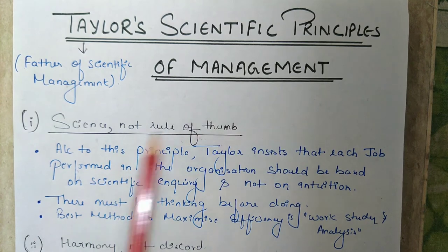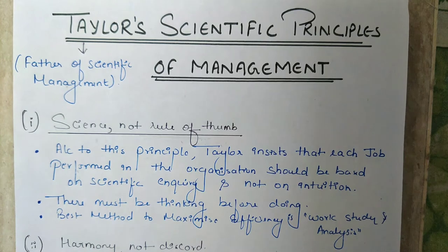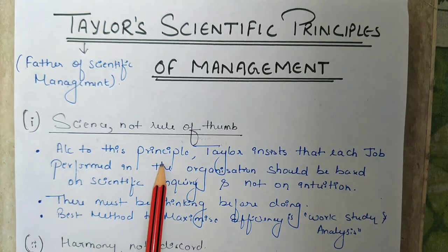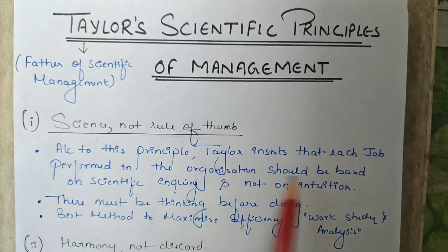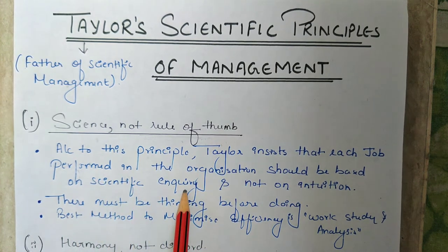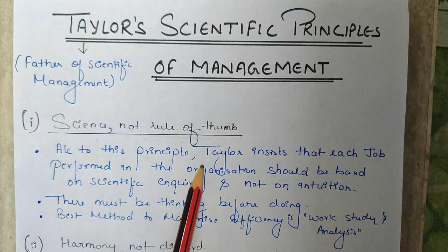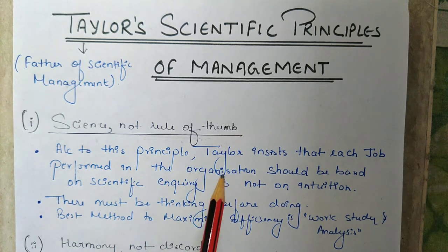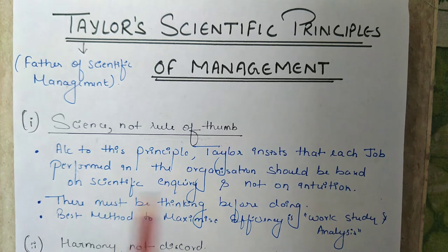In the context of management, rule of thumb also means dictatorship of manager. According to this principle, Taylor insists that each job performed in the organization should be based on scientific inquiry and not on intuition. The manager should not get stuck in a set routine with old techniques of doing work; rather, for better results they should be constantly experimenting to develop new techniques based on scientific inquiry.